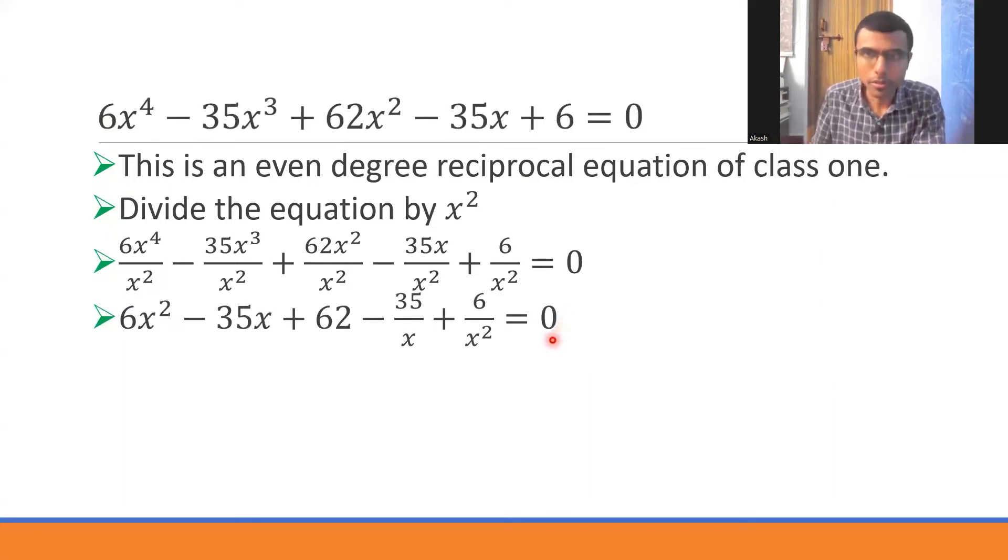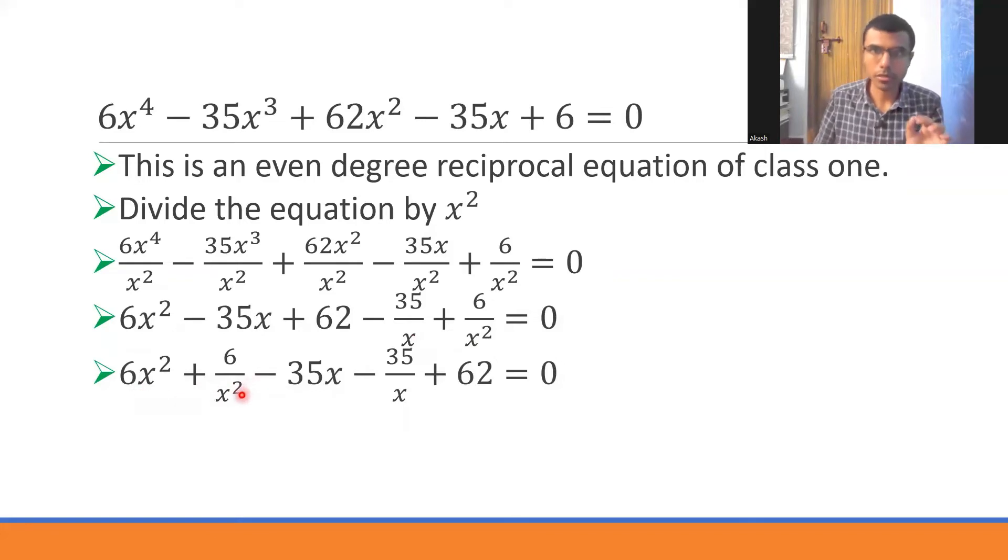Now I'm going to start grouping. I'm going to write 6x² and 6/x² side by side, and -35x and -35/x side by side. I'm going to take 6 common in these two terms, so this would be 6(x² + 1/x²), and take -35 common, so I'd be left with x + 1/x. Leave 62 as it is.